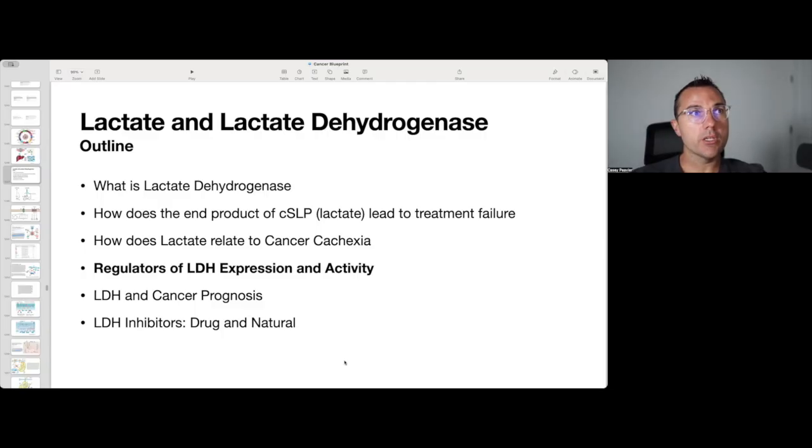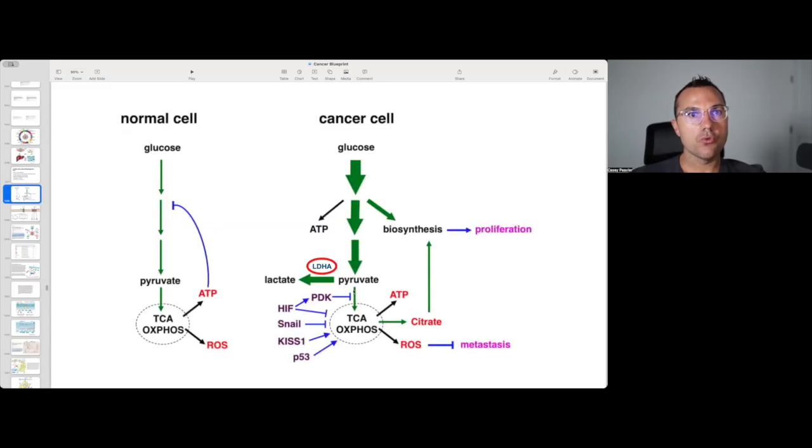As we have been going through this particular enzyme and its byproduct, lactate, we have talked about what it is, the end product of cytosolic substrate level phosphorylation and how that can lead to treatment failure. We did a detour into how lactate relates to cancer-related cachexia, and now we are getting back on track talking about regulators of lactate dehydrogenase expression and activity.